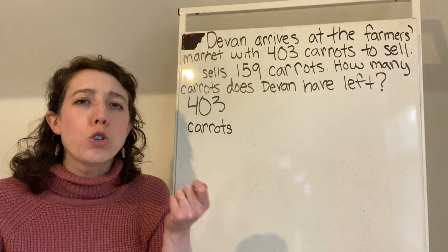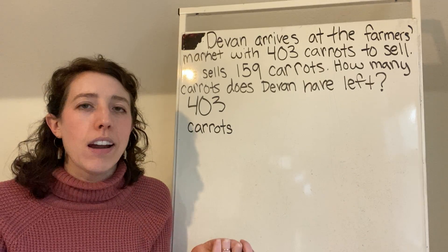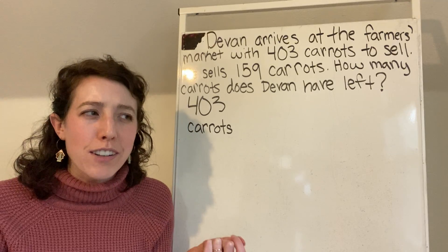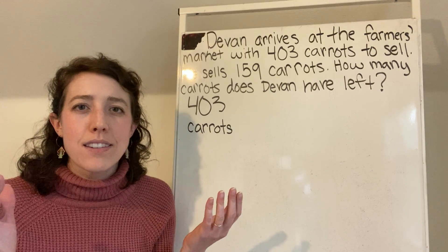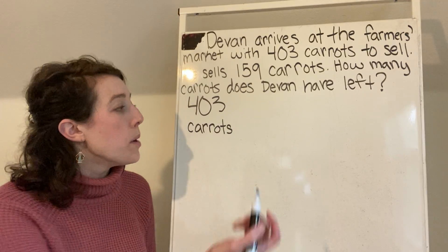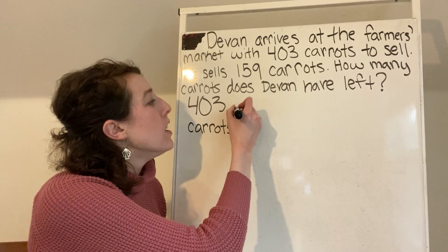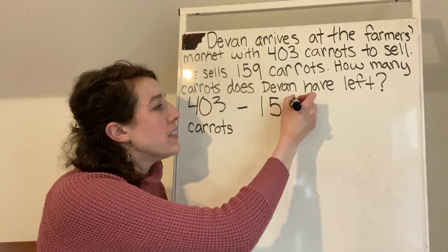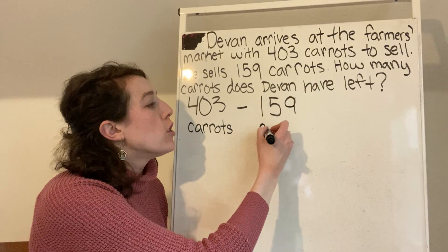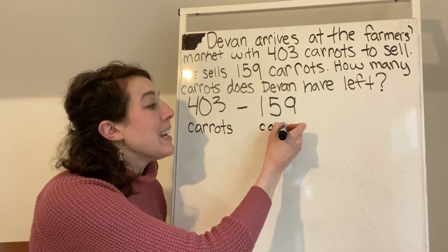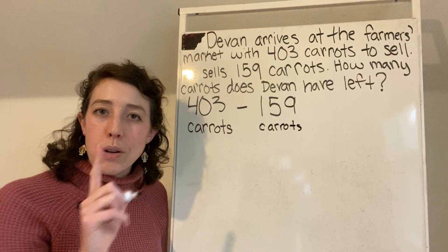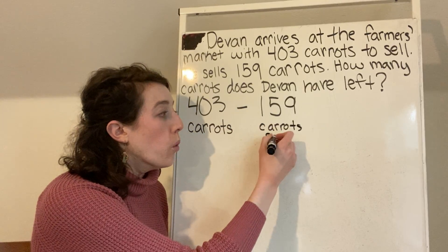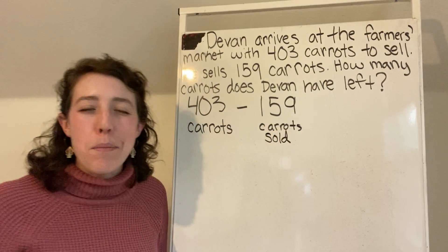So if he sold the carrots, what would you do? Is that adding or subtracting? It's subtracting because he's giving them away. So I'm going to write my minus sign. And he sold 159 carrots. So over here, I'm going to say carrots. But I'm not just going to say carrots. I'm going to say carrots sold. So I can be a little bit more specific.